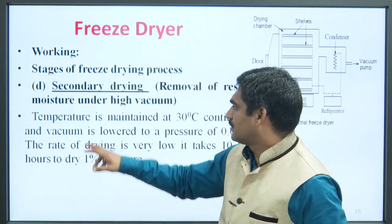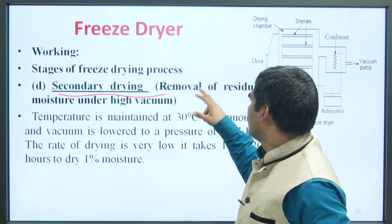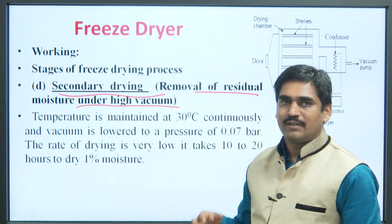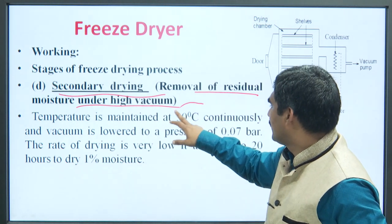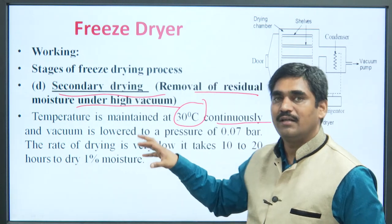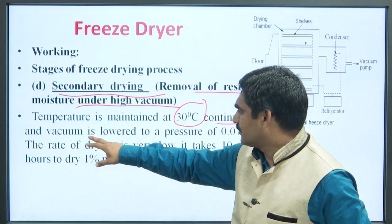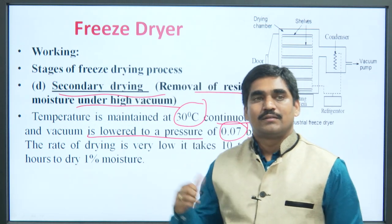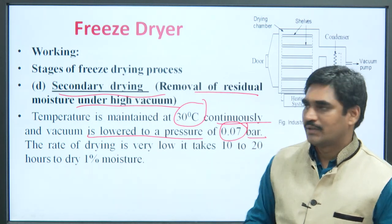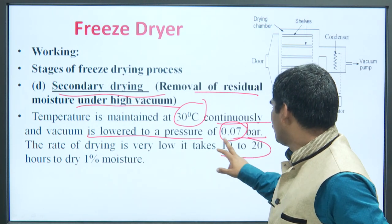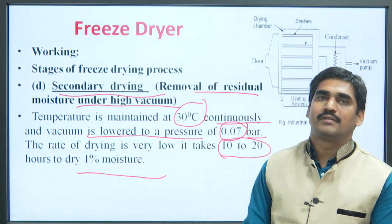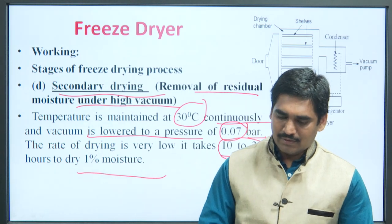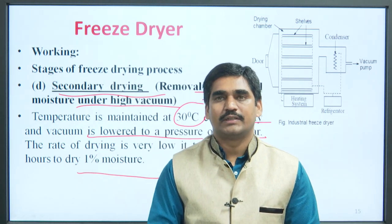The next stage is secondary drying — after primary drying, removal of residual moisture under high vacuum is performed. The temperature is maintained at 30 degree Celsius continuously, and further vacuum is lowered to a pressure of 0.07 bar. This process of drying is very slow — it takes around 10 to 20 hours to dry 1 percent moisture. That means final moisture removal takes place over up to 20 hours.